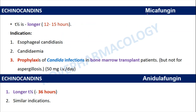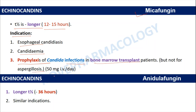Coming to the other echinocandin, micafungin: the main difference from caspofungin is that micafungin is a longer-acting drug with a half-life of around 12 to 15 hours, compared to caspofungin's 10 hours. Micafungin is indicated in esophageal candidiasis, candidemia, and prophylaxis of Candida infections in bone marrow transplant patients, but is not preferred for aspergillosis.